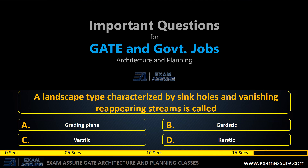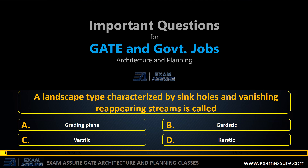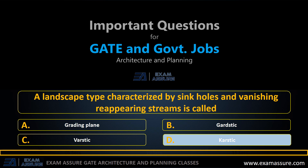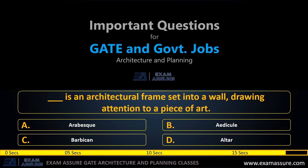Next question: A landscape type characterized by sinkholes and vanishing/reappearing streams is called — option A: grading plane, option B: guard stick, option C: vast tick, option D: karst. The correct answer is option D, karst.